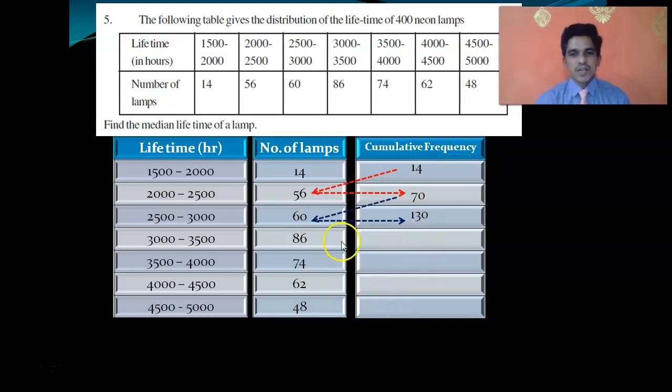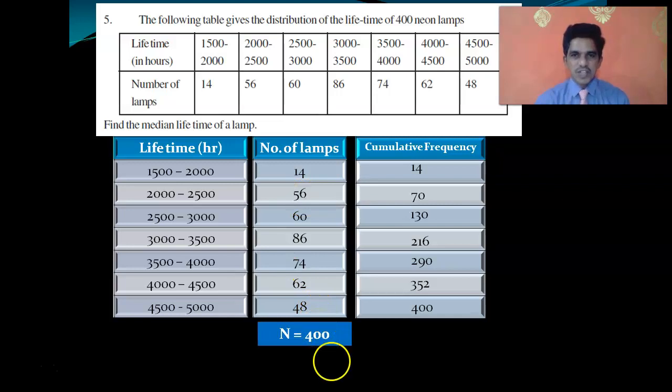Let us write the cumulative frequency. First value is 14. Then 14 plus 56 equals 70. Then 70 plus 60 equals 130. Next 130 plus 86 equals 216, and so on. Calculate all the cumulative frequencies.